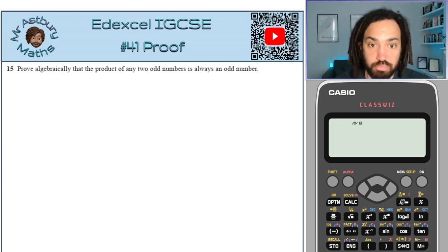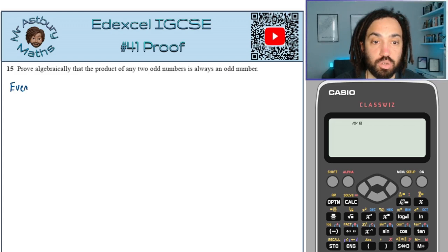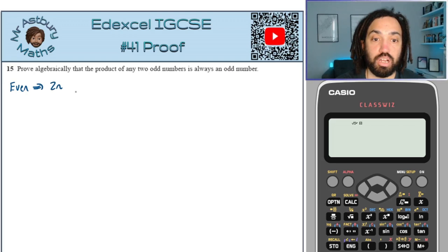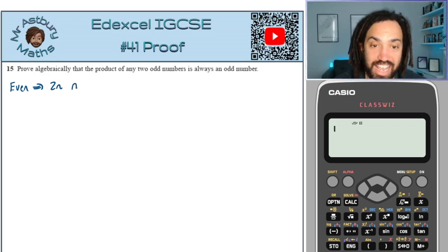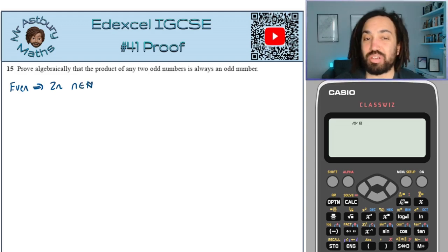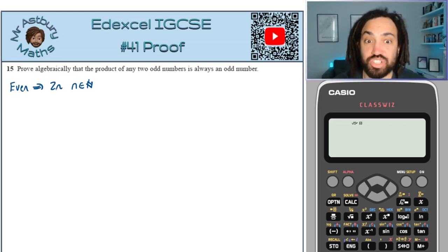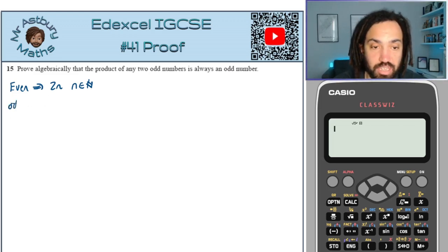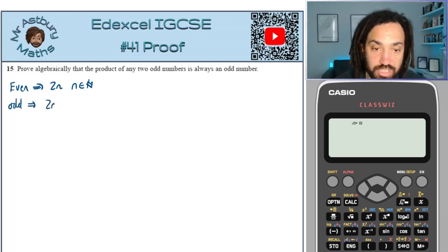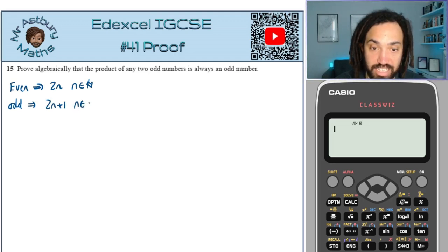So the first thing we've got to know, very important, is how to define an even number and how to define an odd number. An even number we define as 2 multiplied by n, where n is an integer or natural number. We can write it as 2n. An odd number is 2 times a natural number plus 1, where n is again a natural number.